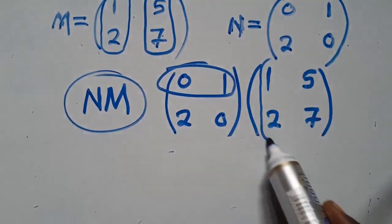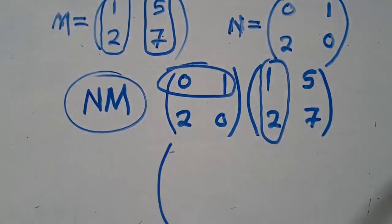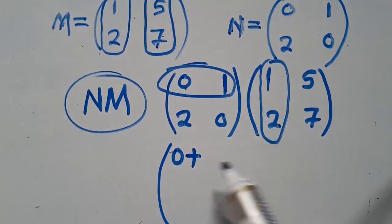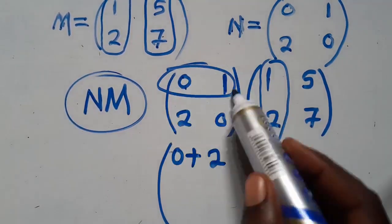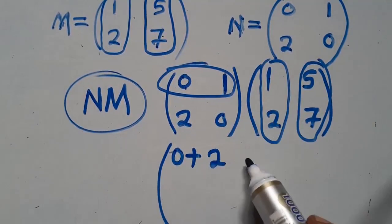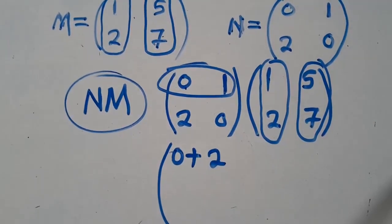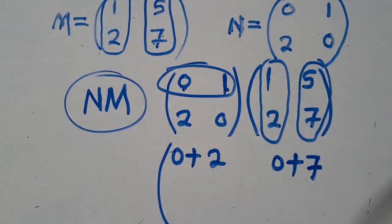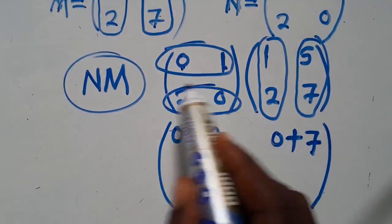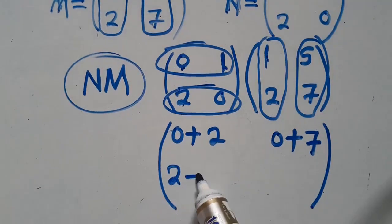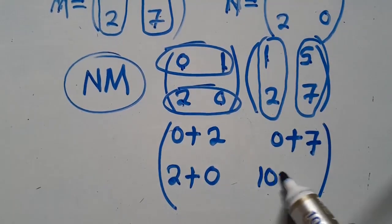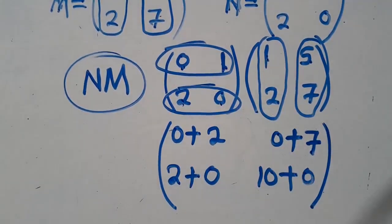We multiply row by column. Take the first row and multiply it with the first column: 0 times 1 is 0, plus 1 times 2 is 2. Same row with the next column: 0 times 5 is 0, plus 1 times 7 is 7. Now go down to the second row with the first column: 2 times 1 is 2, plus 0 times 5 is 0. Second row with second column: 2 times 5 is 10, plus 0 times 7 is 0. Your final answer is: 2, 7, 2, 10.